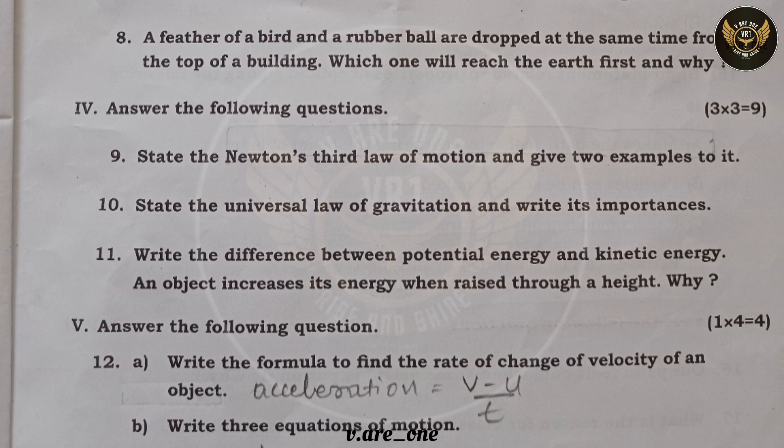Question eleven: the difference between potential and kinetic energy. Potential energy is the energy possessed by a body by virtue of its position; kinetic energy is the energy possessed by a body by virtue of its motion. An object increases its potential energy when it rises through height because potential energy equals mgh — when height increases, potential energy also increases.